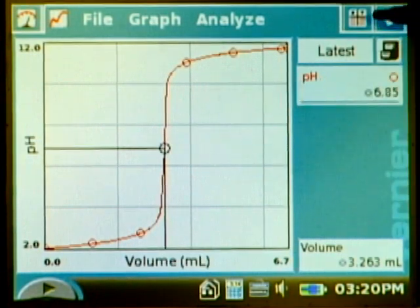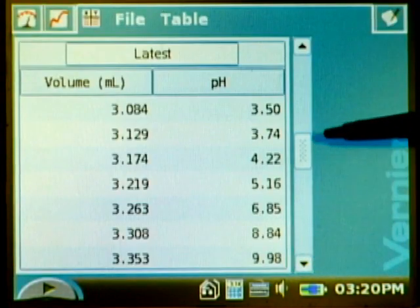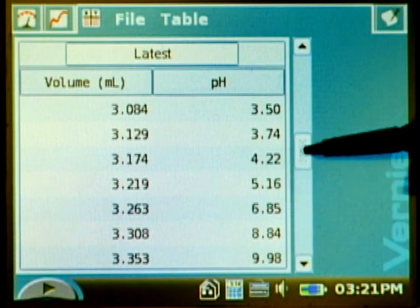If we go to the table tab we could scroll through and look at the changes in pH and find the largest jump. That would be one way but there's a few other ways that are even better.